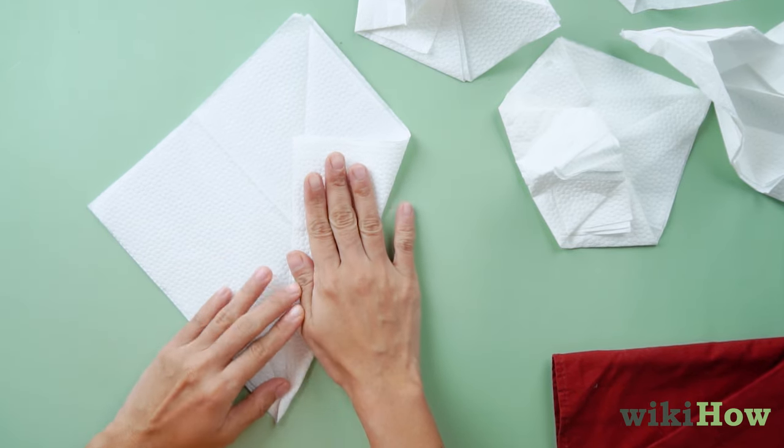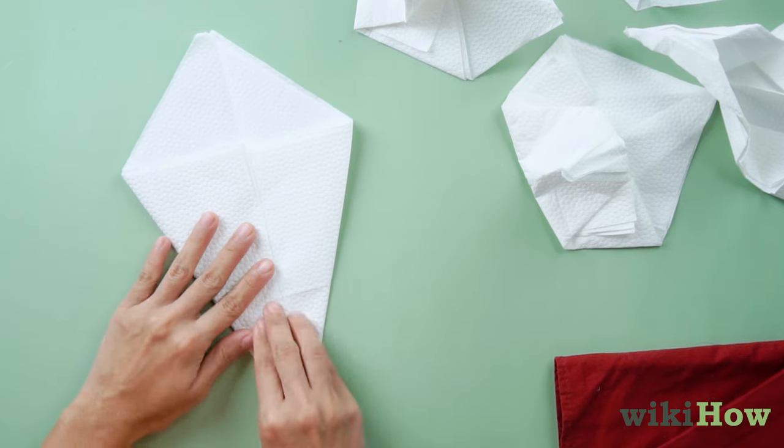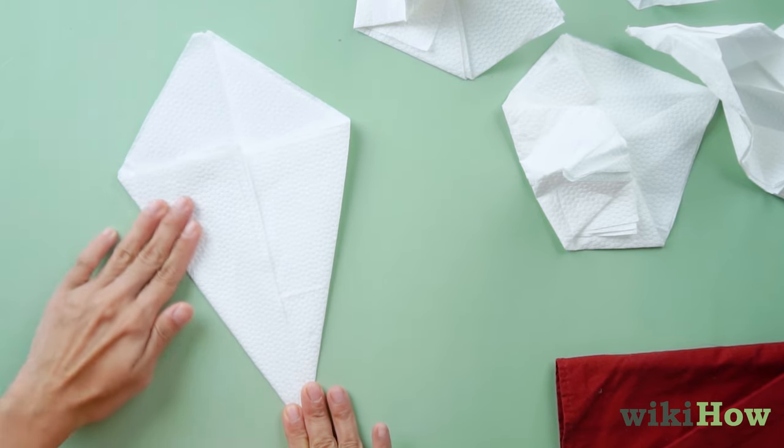Fold the right corner just past the center crease, then do the same thing with the left corner. Your diamond should now be folded into thirds.